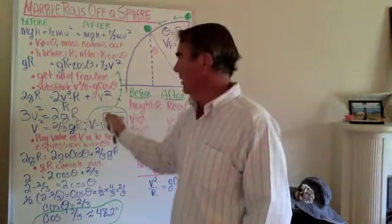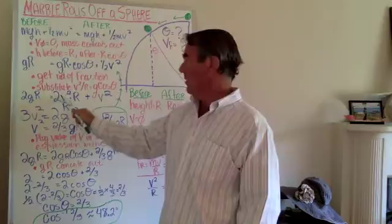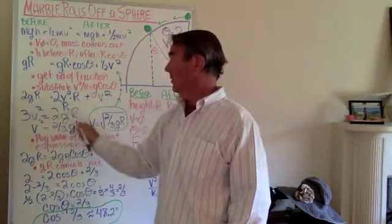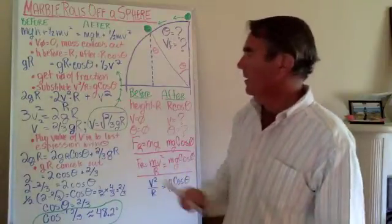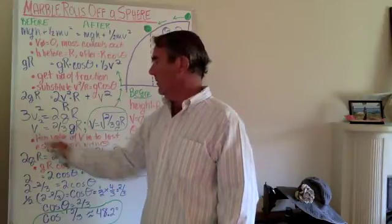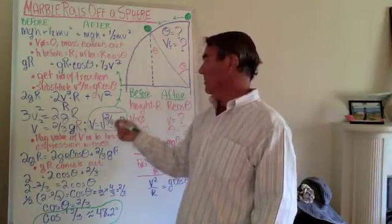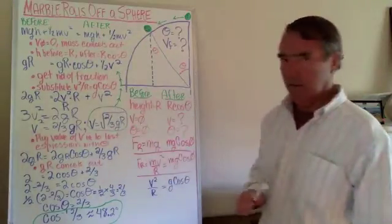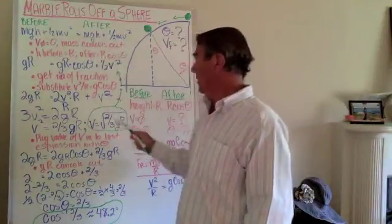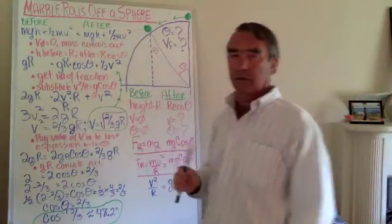Looking at those two terms: r/r cancels out, leaving 2v² + v², or 3v² = 2gr. Dividing both sides by three gives two-thirds gr, and taking the square root of both sides gives the result: velocity at the point of separation is the square root of two-thirds times gravity times radius. The result does not depend on mass, and the greater the radius of the sphere, the faster the marble will be moving at the point of separation.